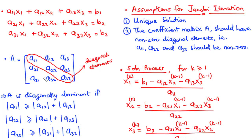The reason why a diagonally dominant matrix is preferred is that it serves as a sufficient condition for the convergence of the approximation to the exact solution — a sufficient condition, not a necessary condition. This means that if A is diagonally dominant, then the iteration is most likely to converge to the exact solution. However, if A is not diagonally dominant, it does not necessarily mean the iteration will not converge.